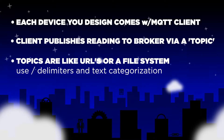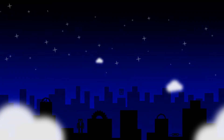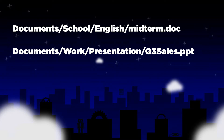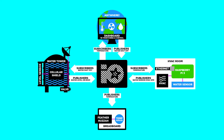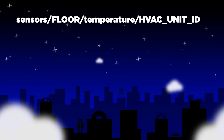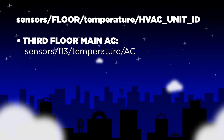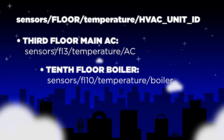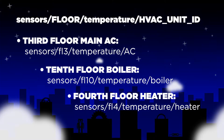Topics are sort of like URLs or a file system. They use slash delimiters and text categorization. So much like you would store your personal documents into folders, topics have a hierarchy. Let's say you have a factory and you wanted to make temperature sensors placed on the HVAC units of each floor in your building publish their temperature. You could set up your topics like so: sensors/floor/temperature/HVAC_ID. So the third floor main AC would be publishing to a topic like this, the 10th floor boiler would have a topic like this, and the fourth floor heater would use a topic like this.